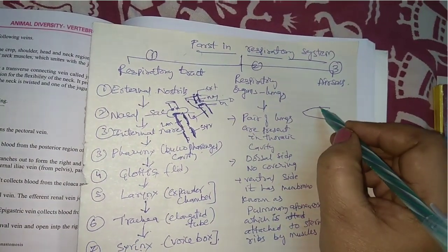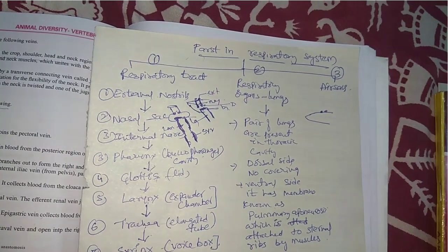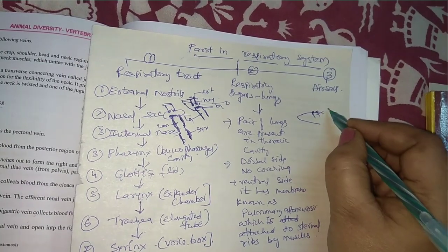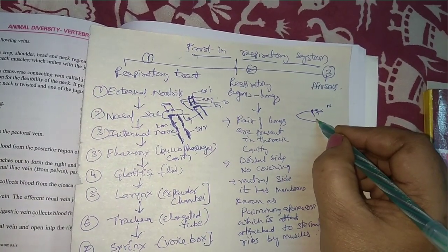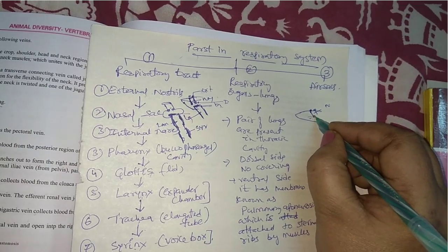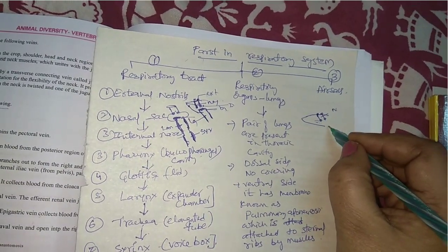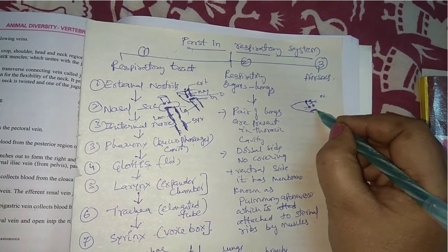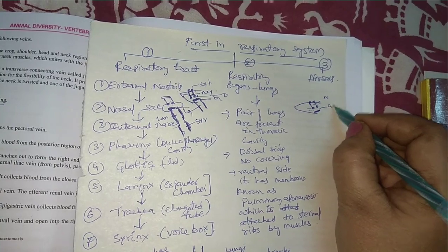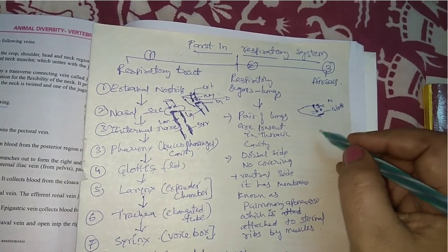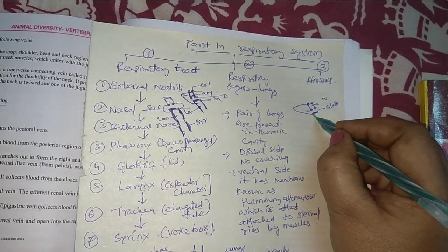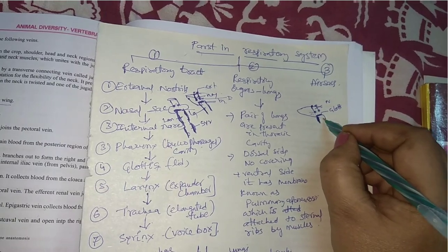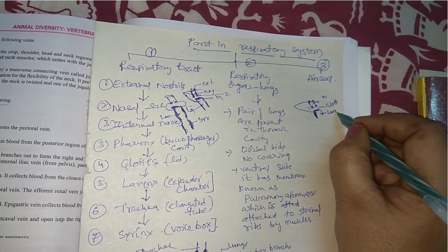This is the beak. Here at the base of the beak, external nostrils are present. These external nostrils open into a narrow space known as the nasal sac, and this nasal sac opens into the bucopharyngeal cavity by internal nostrils. At the bucopharyngeal cavity, a lid-like structure is present known as the glottis.